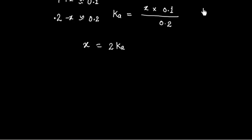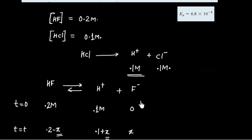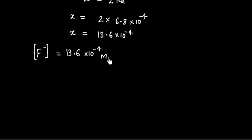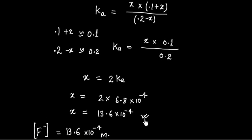The Ka value is given as 6.8 times 10 to the power minus 4. So X equals 2 times 6.8 times 10 to the power minus 4, which gives X equals 13.6 times 10 to the power minus 4 M. This value of X represents the fluoride ion concentration.